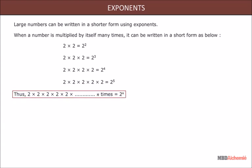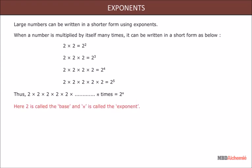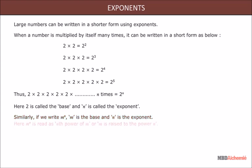Thus, if 2 is multiplied n times to itself, it is equal to 2 to the power n. Here, 2 is called the base and n is called the exponent. Similarly, if we write m to the power n, m is the base and n is the exponent. Here, m to the power n is read as the nth power of m, or m is raised to the power n.